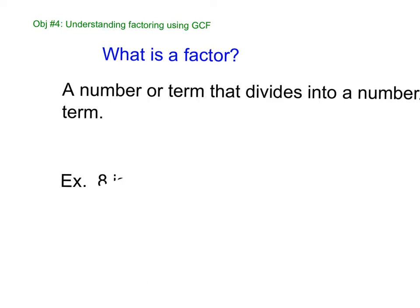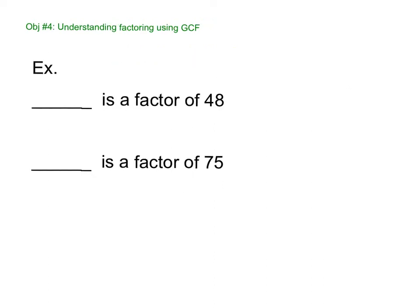A factor is a number or a term that divides into another number or a term. So for example, 8 is a factor of 24, right? There's lots of factors of 24. 1 is a factor, 3, 4, 6, 8, 12, 24 is a factor of 24. So there's lots of factors. All right, so what would be a factor of 48? Write one down. I'm going to write 16 because I bet no one wrote that. A factor of 75, I'm going to go with 25. Again, there are lots of answers.